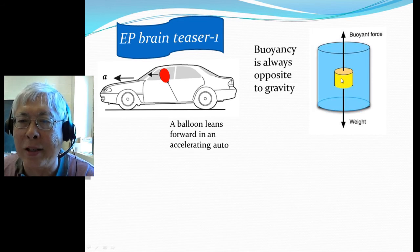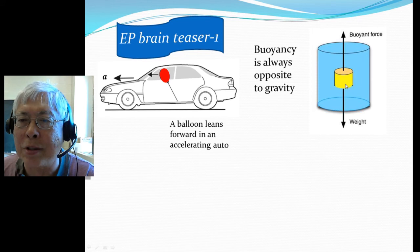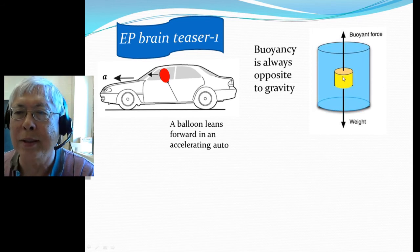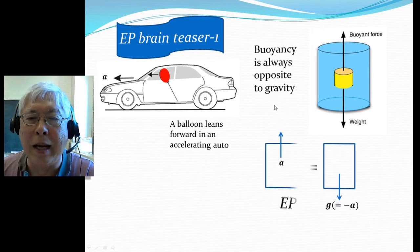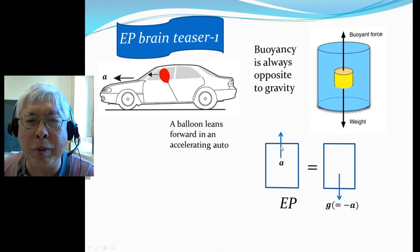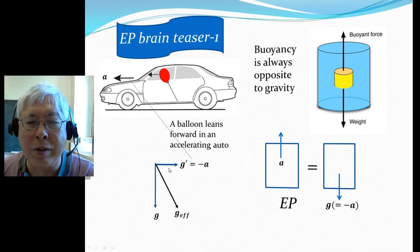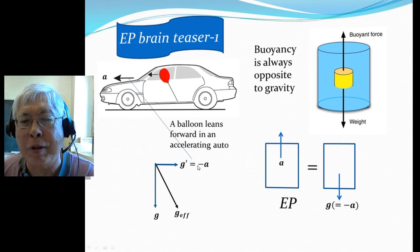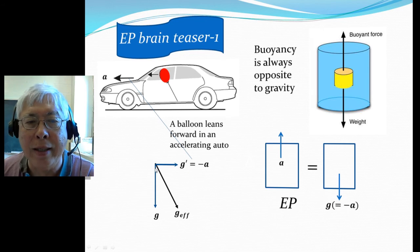If you replace the volume by something lighter like helium, all the outside forces are exactly the same, so therefore it will push upwards because there's less weight. The point is that buoyancy is always opposite to gravity. Now from the equivalence principle we know when I'm accelerating, there's an effective gravitational force in the opposite direction. So there's a g prime equal to minus a that's called an equivalent gravitational force.